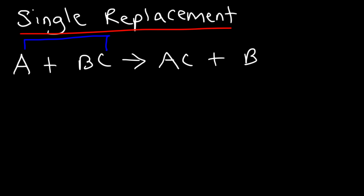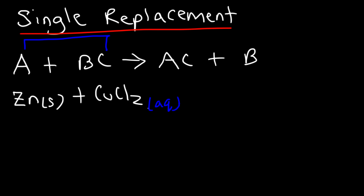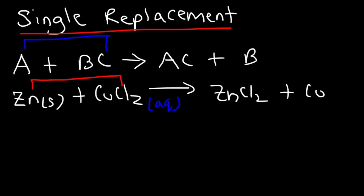For example, zinc metal reacts with a solution of copper chloride in the aqueous state. Zinc is going to replace the copper in solution — zinc goes into the solution and kicks out copper, trading places with it. Zinc pairs up with chlorine to form zinc chloride dissolved in solution, while copper is displaced into its solid metallic form.